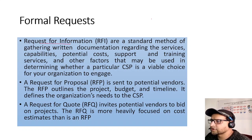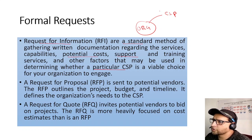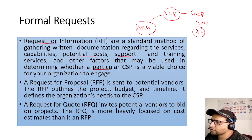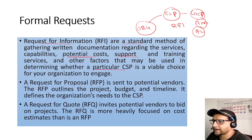Key procurement documents: RFI (Request for Information) is a standard method of gathering written information regarding a CSP's services, capabilities, potential costs, support, and training — used to evaluate whether a particular CSP is a valuable choice. You would research multiple cloud providers such as GCP, AWS, and Azure to see which meets your demand.